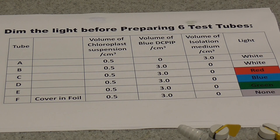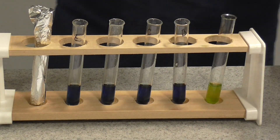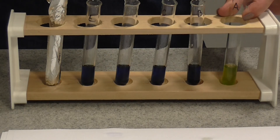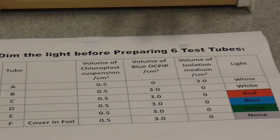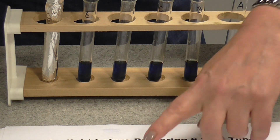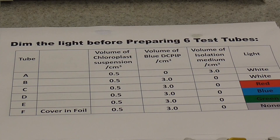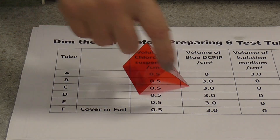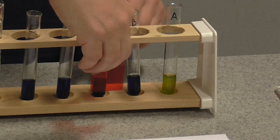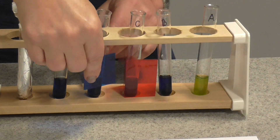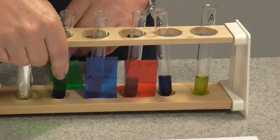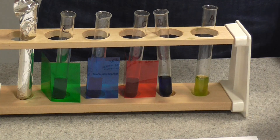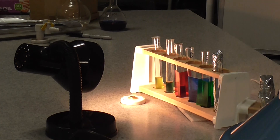We're going to vary the light the tubes are exposed to. Tube A is for comparison with no DCPIP. Tube B is exposed to white light. Tubes C, D and E are exposed to different coloured lights — a very easy way to do this is to buy coloured filters and make them into little tents, sitting them in front of your tubes. Position the tubes in front of a bench lamp and start the timer.